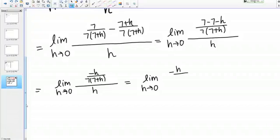So a way I can simplify this is write negative H over 7 times 7 plus H times, so I've got H in the bottom, I'm going to multiply by its reciprocal, 1 over H.